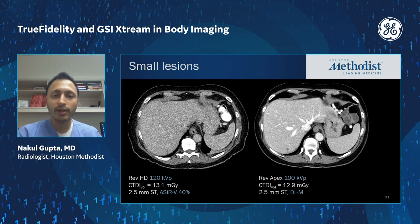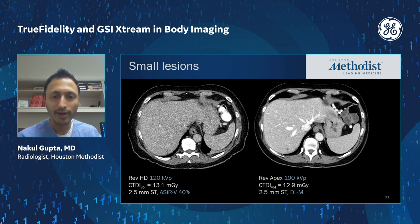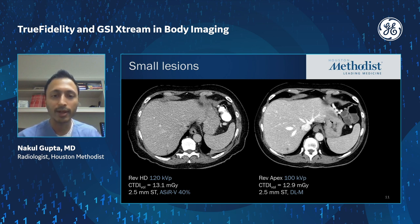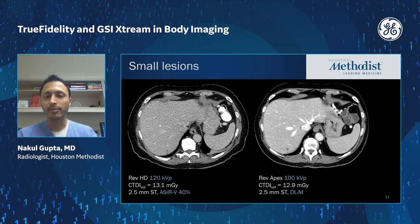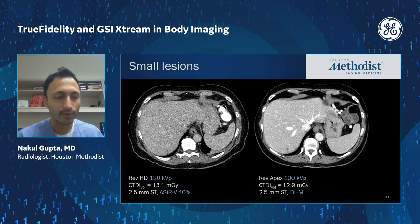You achieve all these benefits without losing low contrast or small lesion detectability. Here's a good example: a patient's prior scan at very similar dose levels on the REVHD at 120 kVp shows a small, low contrast lesion in the posterior right hepatic lobe. On the subsequent scan on the REVOLUTION APEX using deep learning medium at 100 kVp, it's if anything even more conspicuous than before — you're not smoothing over small lesions.